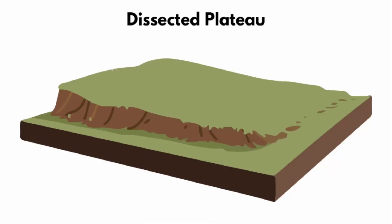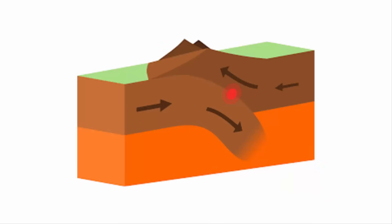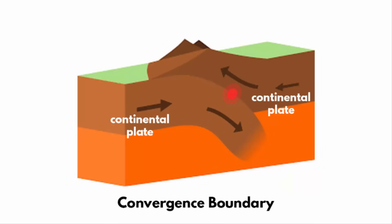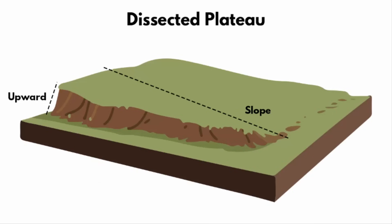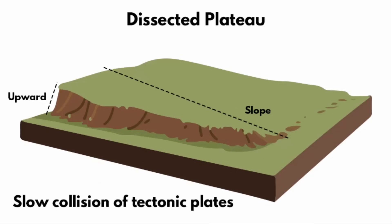Dissected plateaus look like this. These are formed due to upward movement in the earth's crust. One side of this plateau will have a slope. Basically, when two continental plates collide, that is how mountains are formed, right? Even plateaus are like mountains, except with a flat top. So, dissected plateaus are formed due to slow collision of tectonic plates.